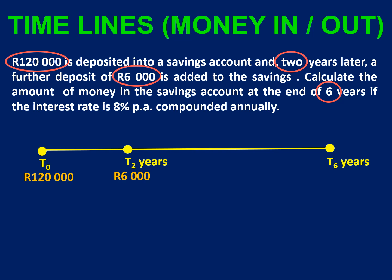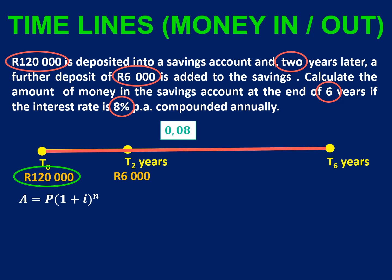With this type of calculation, we don't want to round off too early because that can make a difference of a few decimals, and in finance that can make a big difference. So we want to use our calculators only once if possible. If extra money is going into an account, we can treat it as a completely separate investment — it makes no difference to the final total. We're earning 8% compound interest, so using the compound interest formula, the 120,000 Rand is in the account for a full six years, giving an exponent of six.